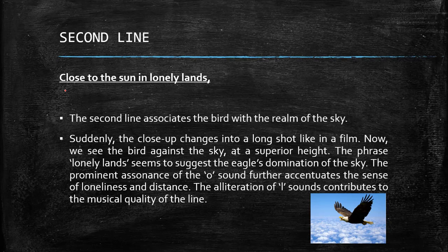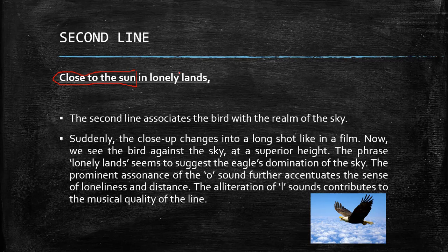The second line is: 'Close to the sun in lonely lands.' This line uses the technique hyperbole — extreme exaggeration. 'Close to the sun' is the hyperbole, emphasizing that this eagle is not just a bird. It highlights his majestic and royal nature and associates the bird with the realm of the sky. Suddenly, the close-up changes into a long shot, like in a film, and we see the bird against the sky at a superior height.